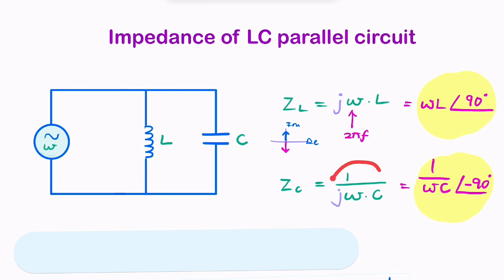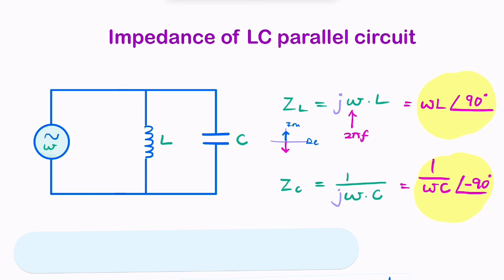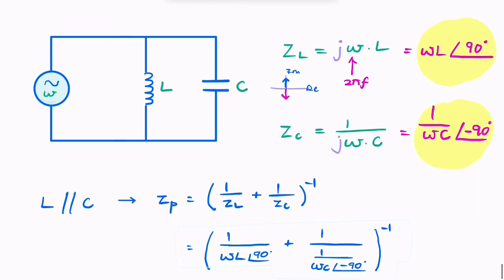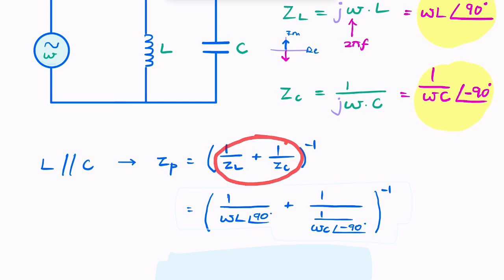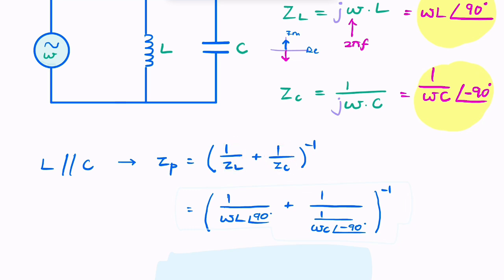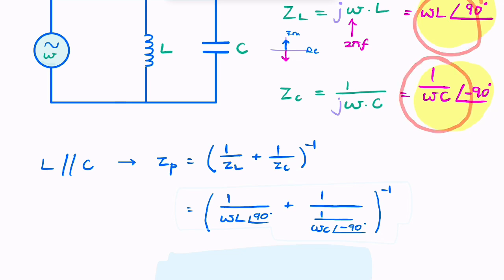To calculate the equivalent parallel impedance, you simply take the sum of the reciprocals of the impedances. The reciprocal of an impedance is called an admittance, so it's the sum of the admittances. That gives us 1/Z_L plus 1/Z_C.